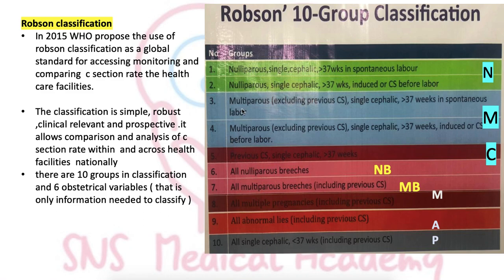Groups 3 and 4 are multiparas with singleton cephalic pregnancies more than 37 weeks. Group 3 is in spontaneous labour — all normal in multips. Group 4 is multip with induced labour or C-section before labour, meaning elective C-section. So remember: Groups 1 and 2 are nulli, Groups 3 and 4 are multi.